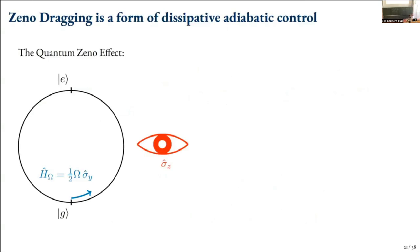If we have a single qubit starting in the ground state and want to go to the excited state, we normally do this with a unitary like a sigma-y rotation. But if we start monitoring by measuring sigma-z, then the quantum Zeno effect will always push us back into the ground state. With strong measurement that will basically pin us to that state.